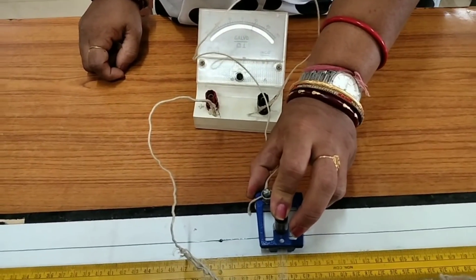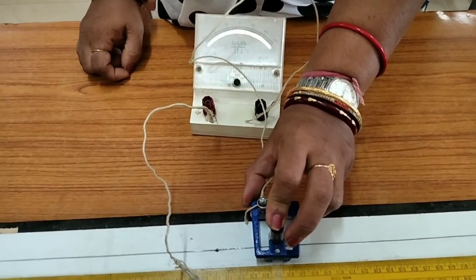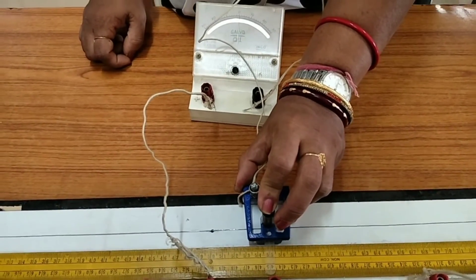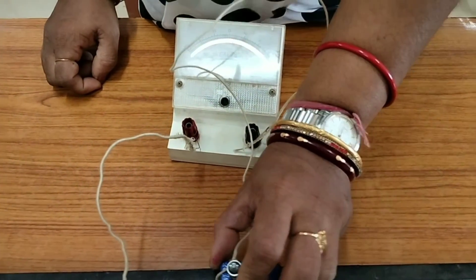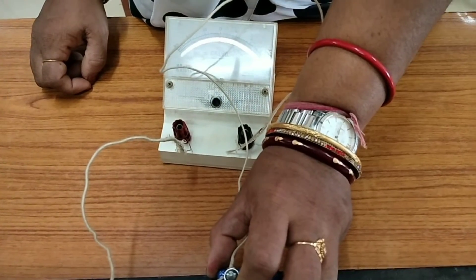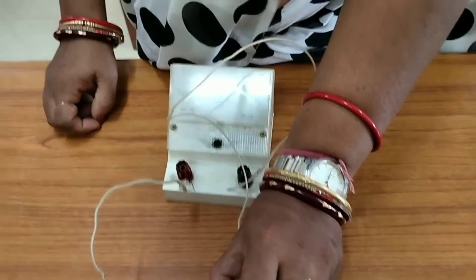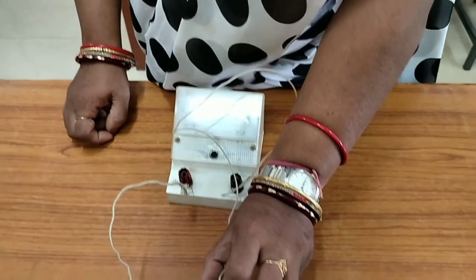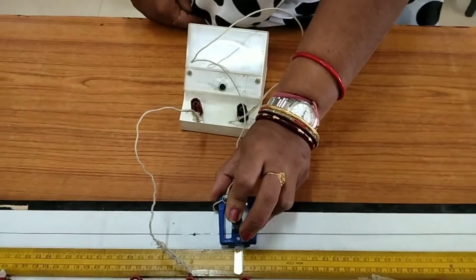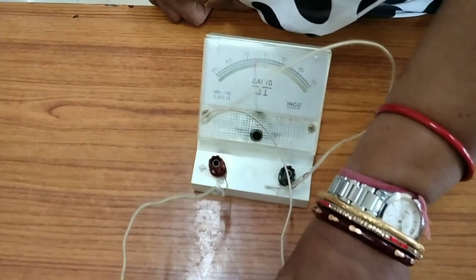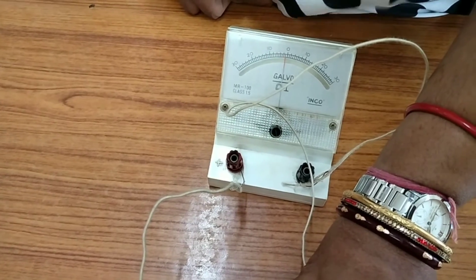By displacing this jockey you can find out the null point in the galvanometer. This is the aim of our experiment by using Whiston's bridge. And at this position where you find out the null point, you take the reading of L1.